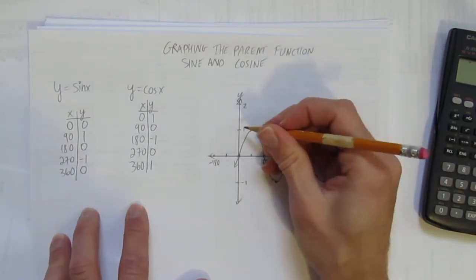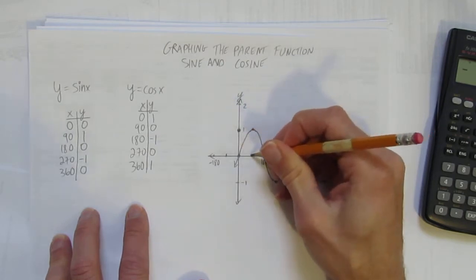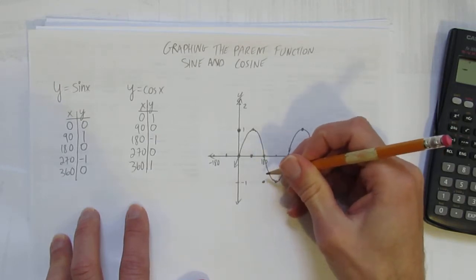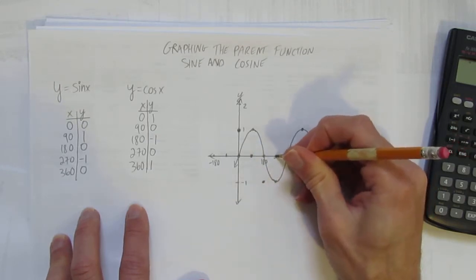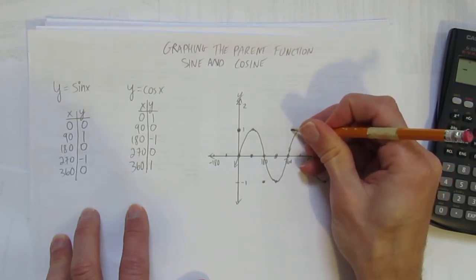Let's graph it. Cosine starts at 1. And then at 90 degrees goes down to 0. At 180, it's at negative 1. At 270, it's back to 0. And at 360, it's all the way up here at 1.